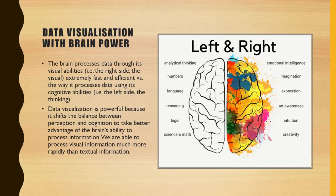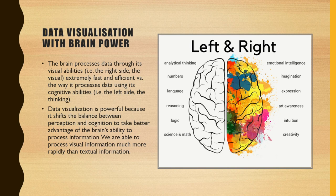Let's dig a bit deeper into how data visualization works with our brain power. As you can see in this image, our brain is basically divided into two main categories — the left part and the right part. The right part is our more visual part, as you can see with the color combination on the right side of the brain, and it processes most of our visual abilities. The left side is where most of the cognitive abilities are processed. Data visualization is so powerful because it creates a balance between perception and cognition to take advantage of the brain's ability to process information. That way we are able to process visual information much more rapidly than any other sense — reading, listening, or hearing.